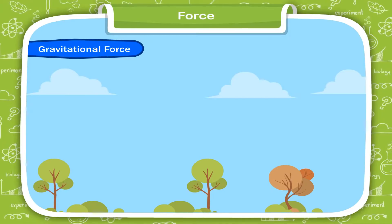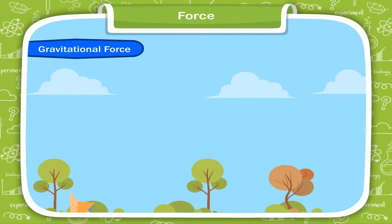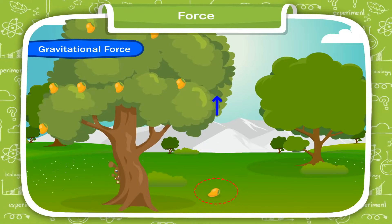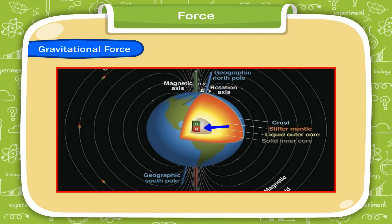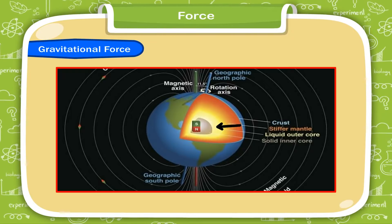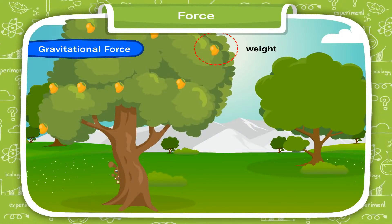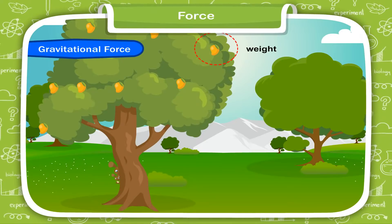Gravitational Force: Whenever an object is thrown vertically upwards, it comes back down to the earth. Mangoes falling from a tree always come down — why can they not go up? This is because the earth pulls all objects towards its center. The pull exerted by the earth on objects is called the force of gravity or gravitational force. The force by which an object is attracted towards the earth is called its weight, defined as the force with which a body is attracted towards the center of the earth.